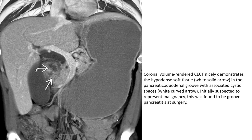Another case of groove pancreatitis shown on coronal volume-rendered contrast-enhanced CT. The hypodense soft tissue — indicated by the white slit arrow — in the pancreaticoduodenal groove with associated cystic space indicated by the white curved arrow was initially suspected to represent malignancy, but was found to be groove pancreatitis at surgery.